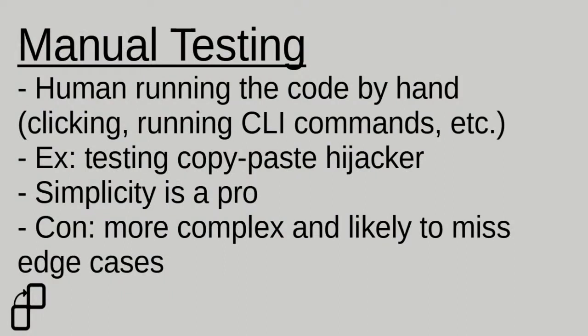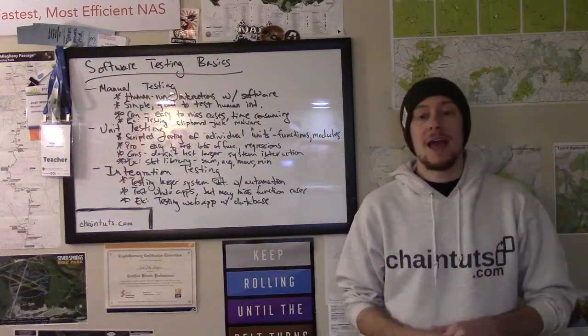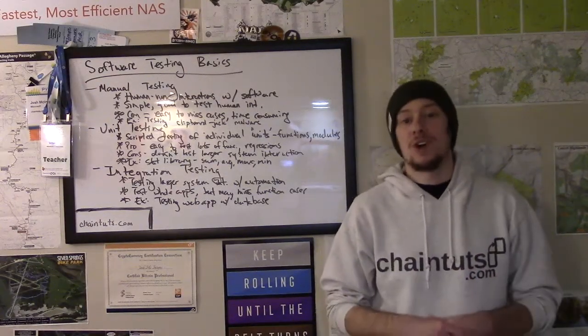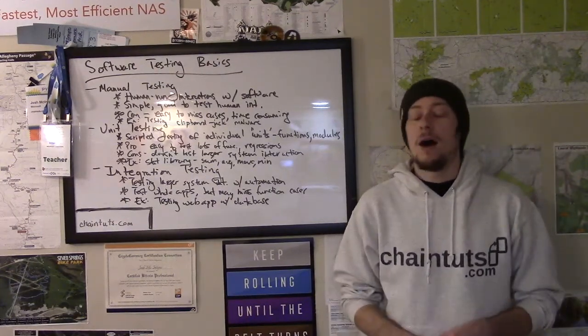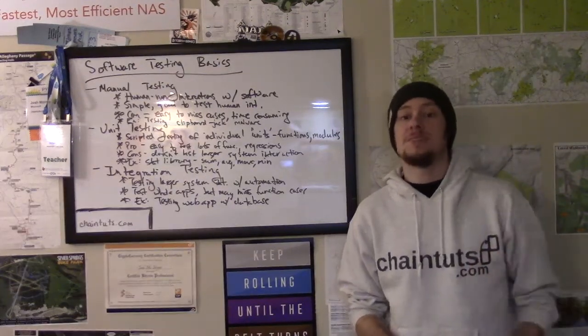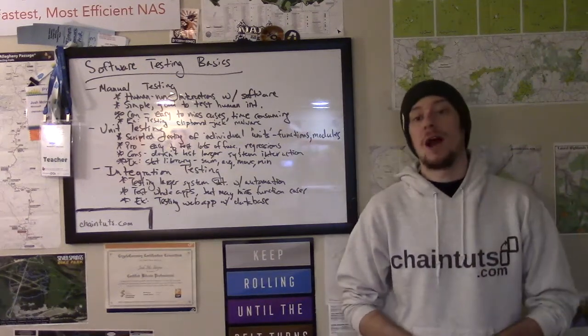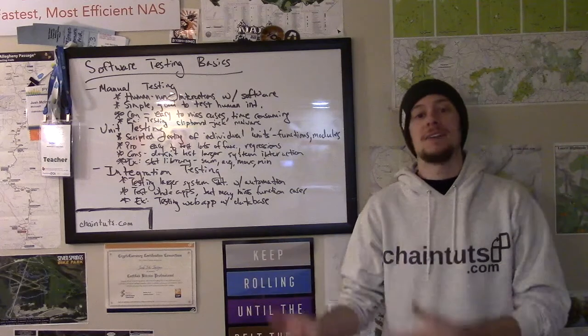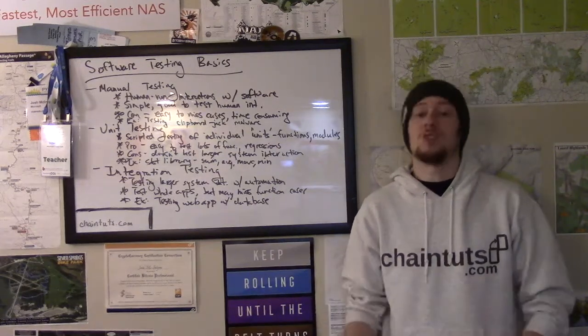If you've ever written code before, you probably have done some form of manual testing, and this simply means a human interacting with the software the way the intended consumer of the software will. For example, let's say we want to test a program that detects a Bitcoin address in your copy-paste buffer or clipboard and replaces it with an attacker address — like a cool educational malware. The way that you would test this manually is to run your program in the background, copy a Bitcoin address, and then paste it to make sure that it changes the way that you intended.